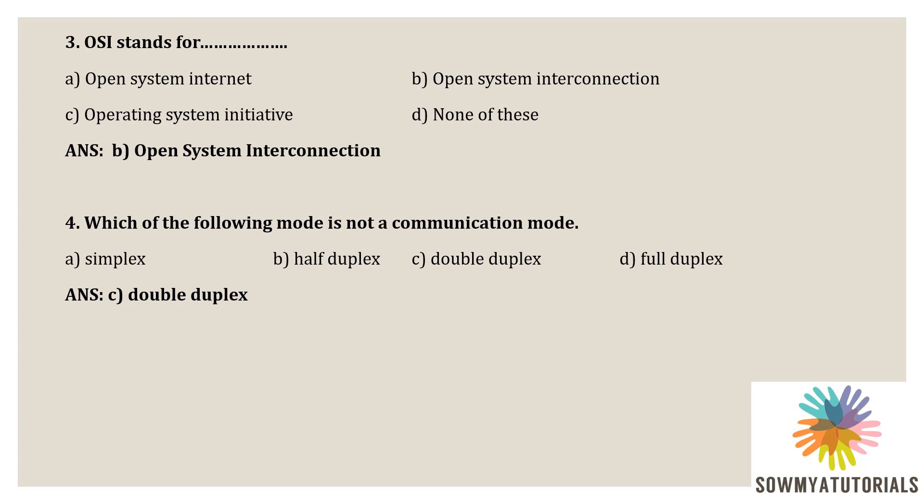In simplex mode, the sender can send the data but cannot receive data, so it is called unidirectional communication. In half duplex mode, the sender can send the data and also receive data, but only one at a time. It is two-way directional communication, but one at a time. In full duplex mode, the sender can send the data and also receive data simultaneously — it is two-way directional communication simultaneously. So option C, double duplex, is not a communication mode.